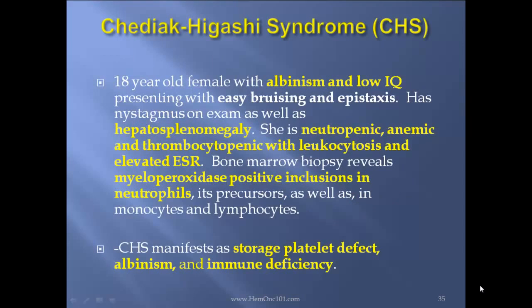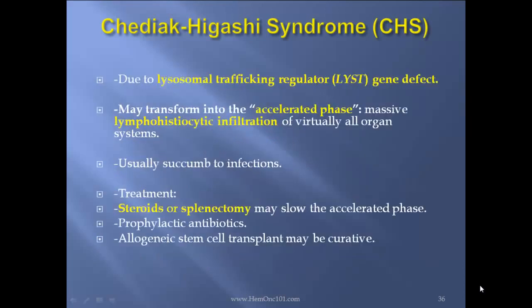Chediak-Higashi syndrome case report: 18-year-old female with albinism and low IQ presenting with easy bruising and epistaxis. Has nystagmus on exam as well as hepatosplenomegaly. She is neutropenic, anemic, thrombocytopenic with leukocytosis and elevated ESR. Bone marrow biopsy reveals myeloperoxidase-positive inclusions in neutrophils and precursors as well as monocytes and lymphocytes. Chediak-Higashi syndrome manifests as a storage platelet defect, albinism, and immune deficiency — due to a lysosomal trafficking regulator LYST gene defect. Remember for the boards: this may transform into the accelerated phase, which is massive lymphohistiocytic infiltration of virtually all organ systems. Patients usually succumb to infections. Treatment: steroids or splenectomy may slow the accelerated phase. Prophylactic antibiotics and allogeneic stem cell transplant may be curative.